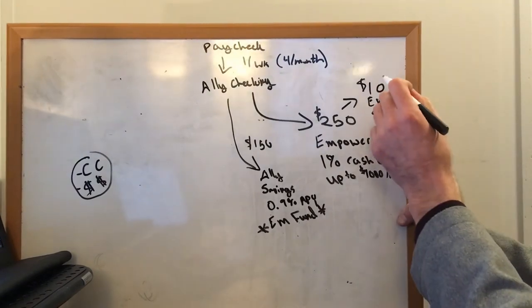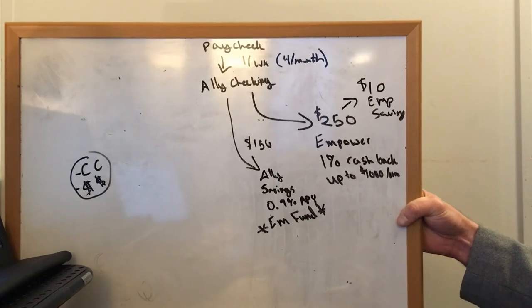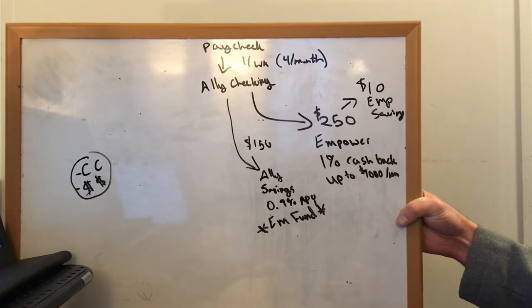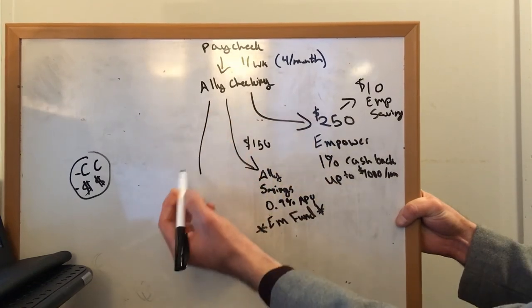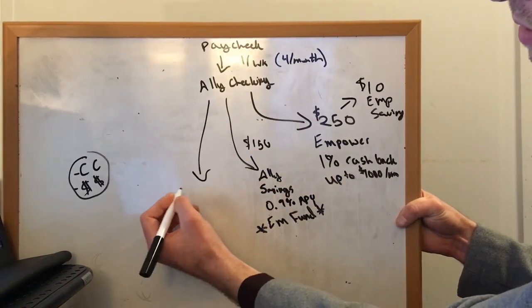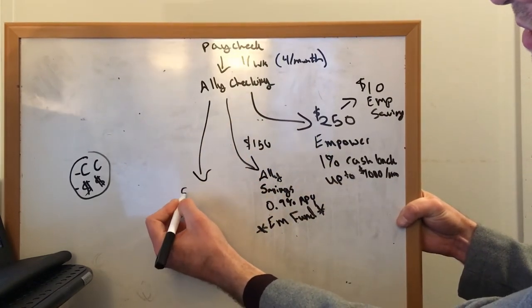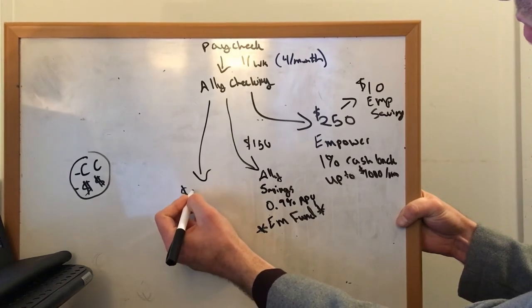Oh, I forgot to mention this one also makes pretty good APY as well. I think it's 1.6 or 1.7%. The next thing is I have another savings account and this is another, I think this is $250 a month. And this goes to my Wealthfront cash account.